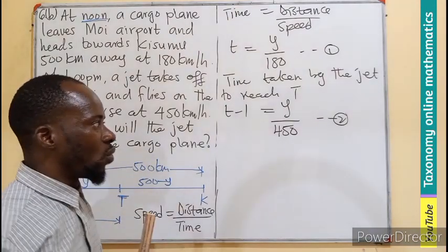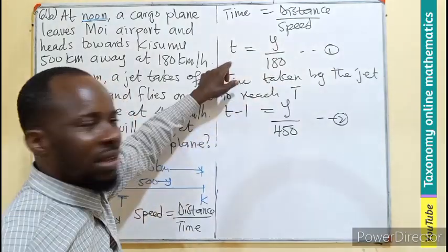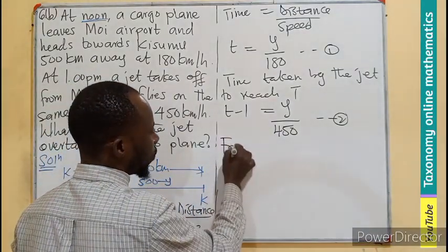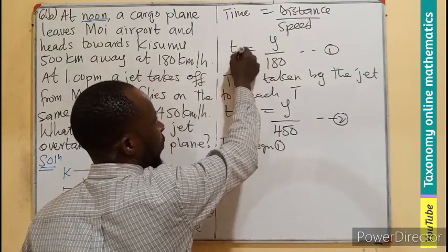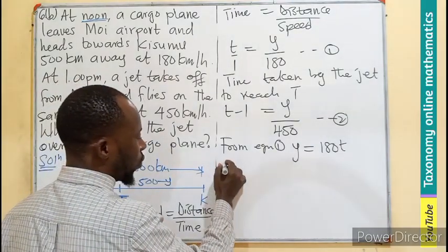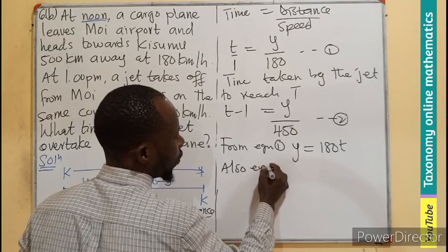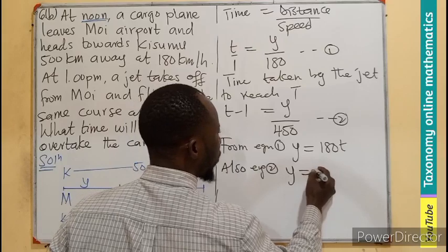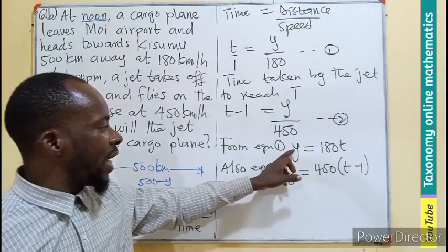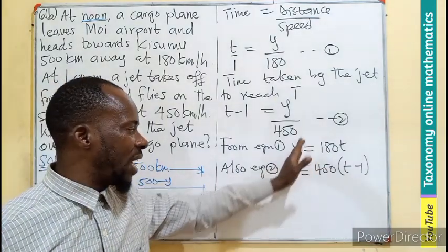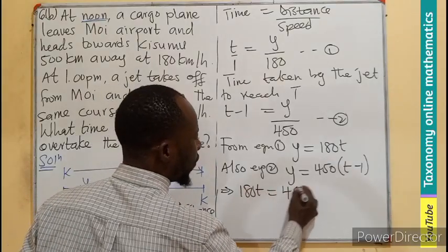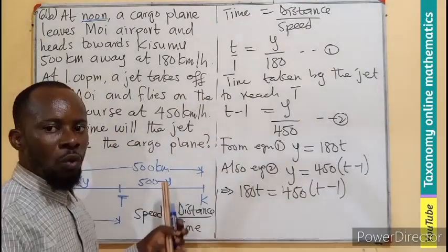So we are having two simultaneous equations. What I can do is make Y the subject here and make Y the subject here, so that I equate the two. From equation 1, if you cross-multiply, Y will be equal to 180 times T. From equation 2, Y will be equal to 450 into bracket T minus 1. So I can equate the 180T to be equal to 450(T minus 1) since Y is the same thing.